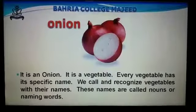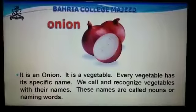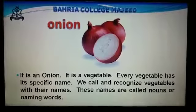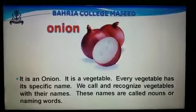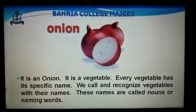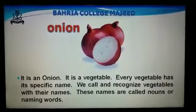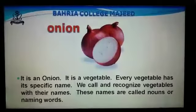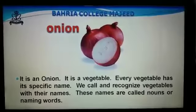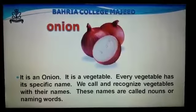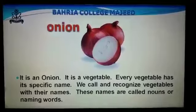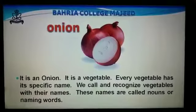Now you can see the picture. It is an onion. It is a vegetable. Every vegetable has its specific name. We call and recognize vegetables with their names. These names are called nouns or naming words.